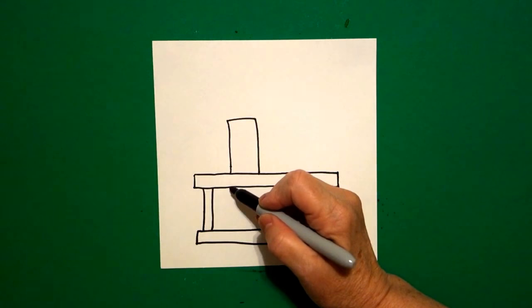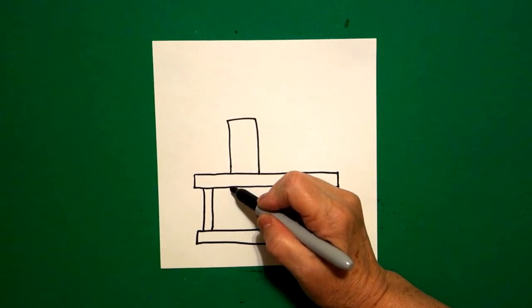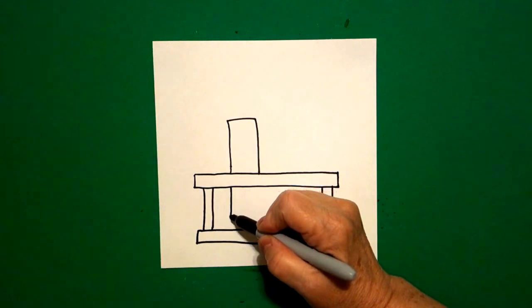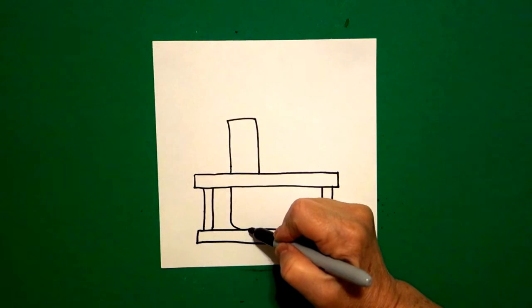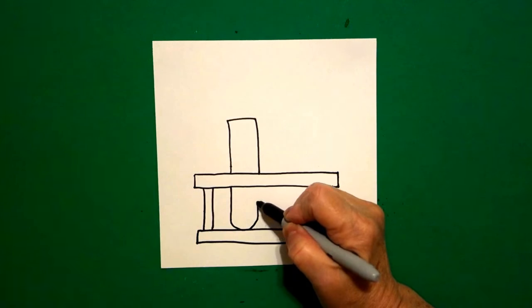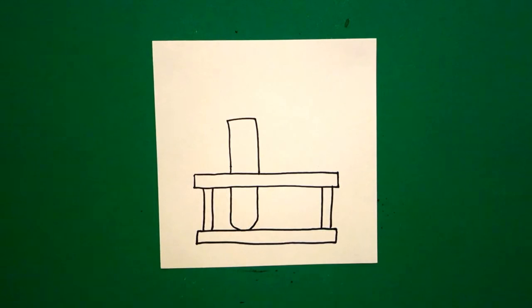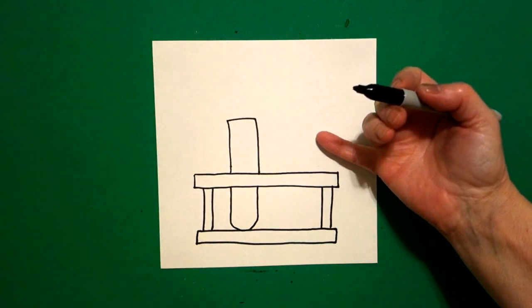Jump over that skinny rectangle and continue straight line down, curve line, straight line up, connect. Come on the right hand side, and we're going to do it again.